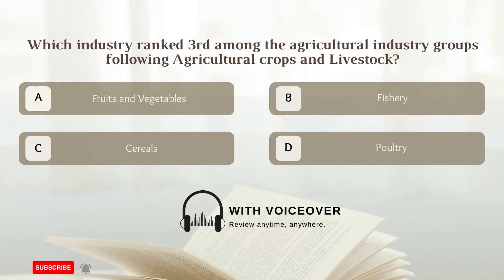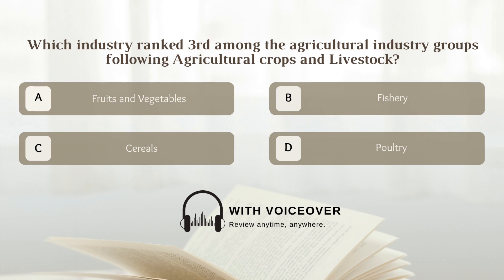Which industry ranked third among agricultural industry groups following agricultural crops and livestock? A. Fruits and vegetables; B. Fishery; C. Cereals; D. Poultry. Answer B. Fishery.